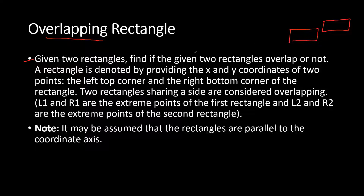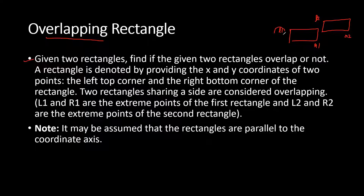We need to determine whether the two given rectangles overlap or not. The rectangle is denoted by providing the x and y coordinates of two points: the left-top corner and the right-bottom corner of the rectangle. We will be given the left-top corner and the right-bottom corner of both rectangles, along with their x and y coordinates. With this information we need to find whether the two rectangles overlap or not.